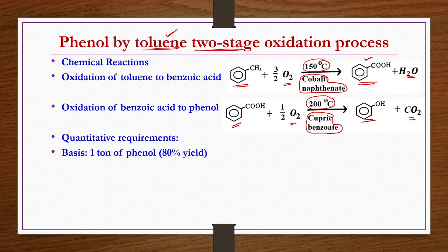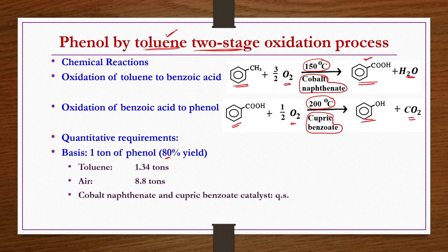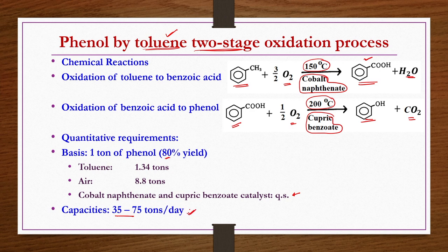Quantitative requirements: to produce 1 ton of phenol at 80% yield, you require 1.34 tons of toluene and 8.8 tons of air, with trace quantities of cobalt naphthenate and cupric benzoate catalysts. Plant capacities of 35 to 75 tons per day are very common using this process. In this process, toluene conversion to benzoic acid is limited to only 40%; if more conversion occurs, byproducts like benzaldehyde would also form, making subsequent purification very difficult.